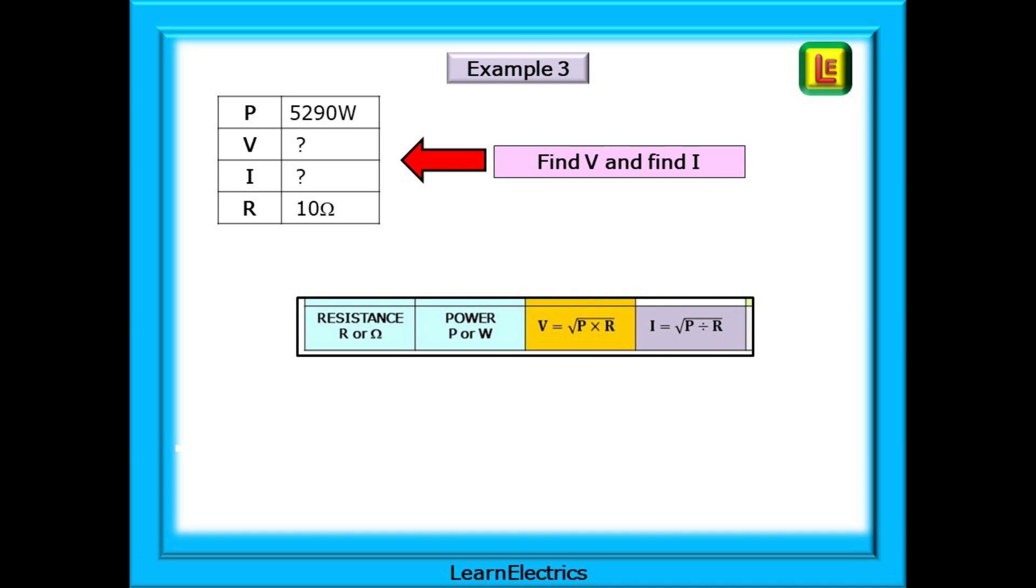Example three asks us to find V and I, if we already know P and R. So start by finding the correct row in the matrix, and then make the calculations. Pause the video and answer the question before looking at the answer.